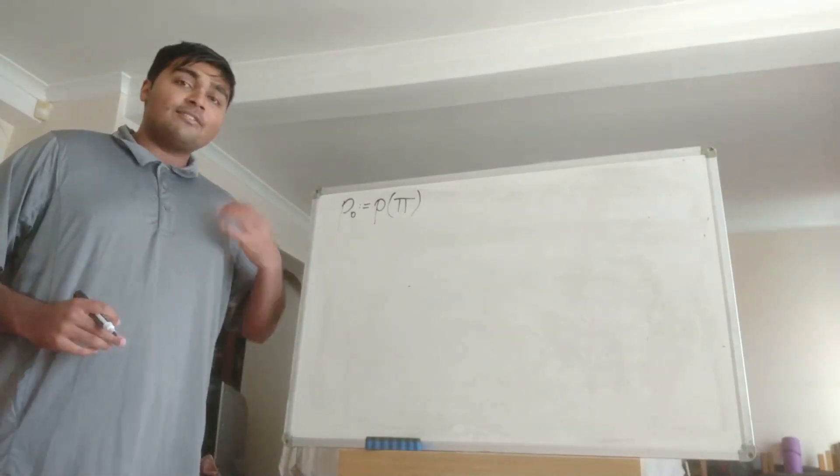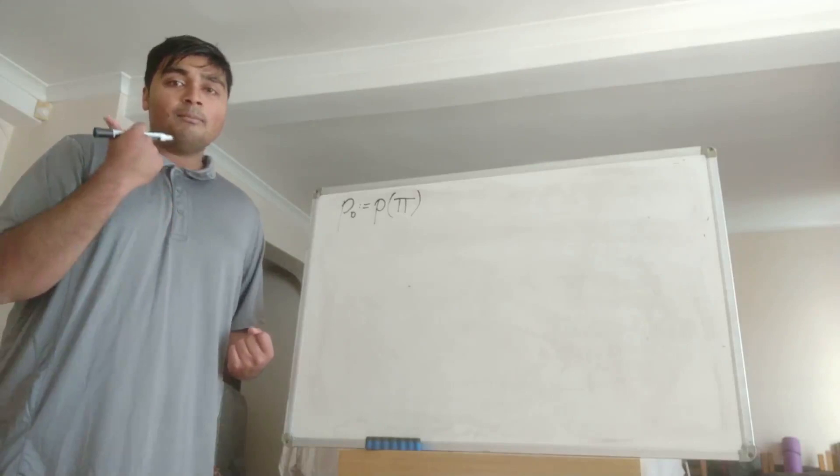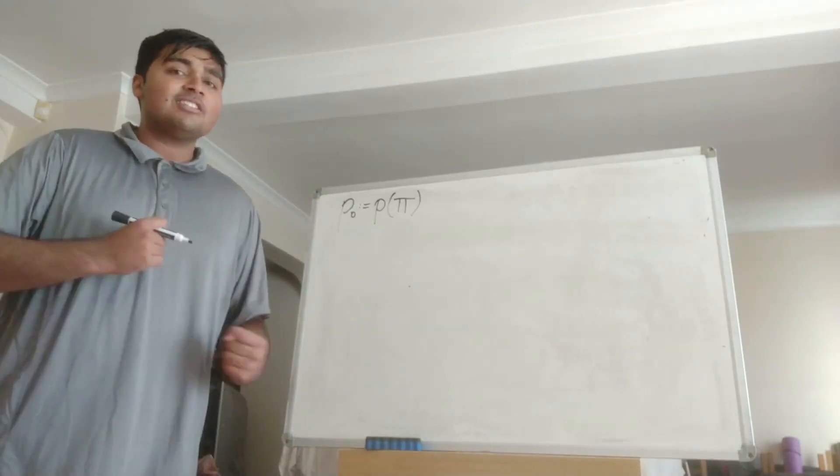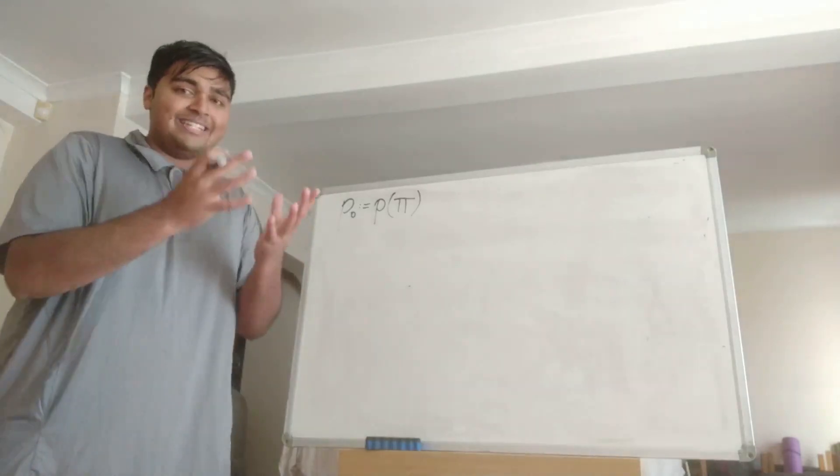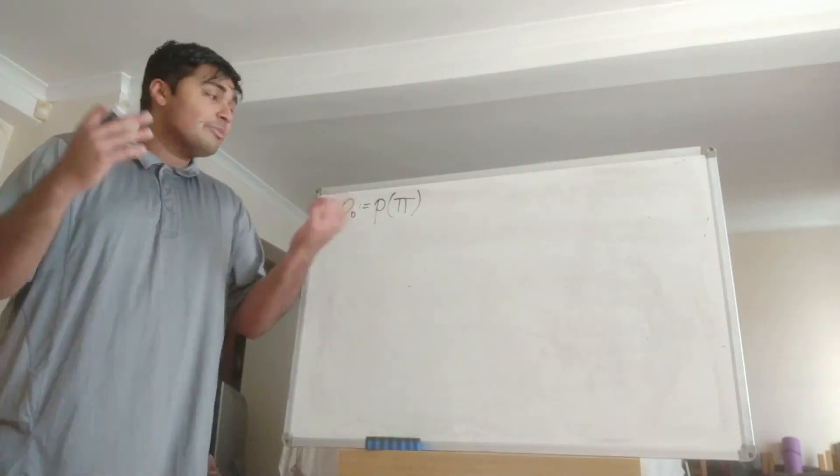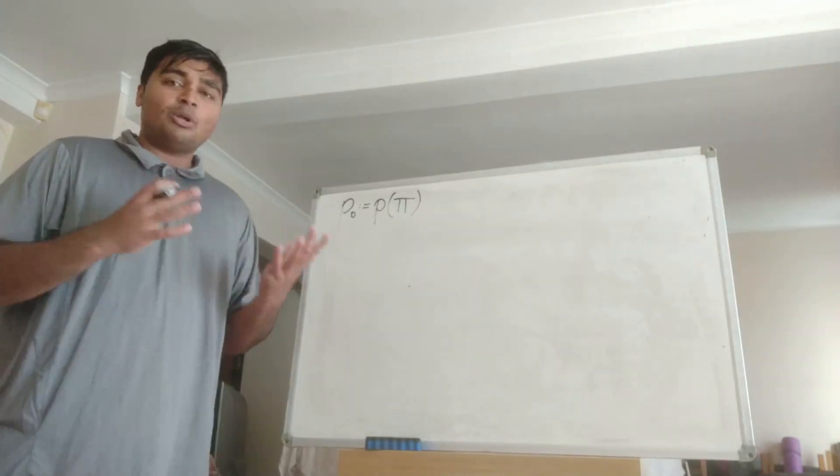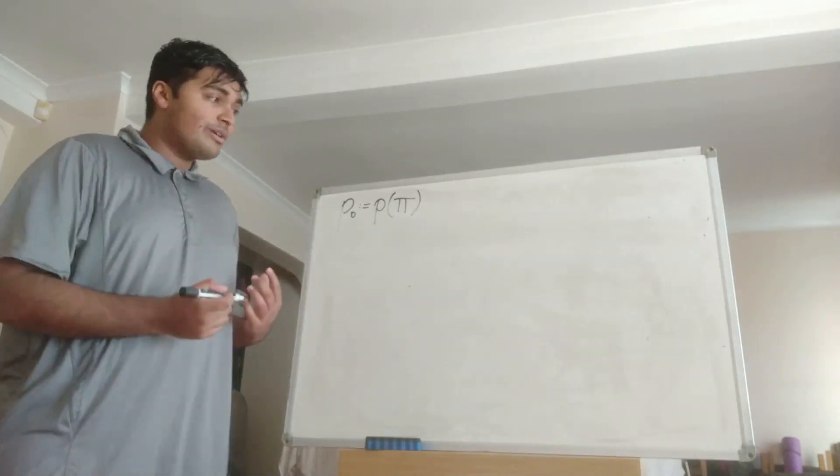Then what we're going to do is firstly show that there's only one polynomial that has non-negative integer coefficients such that when you evaluate it at pi you're going to get P_0 and that polynomial is P. To prove that we're going to do it by contradiction. So suppose there exists some polynomial Q with Q does not equal P.